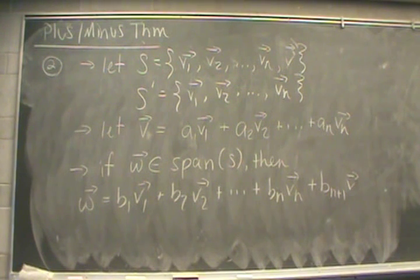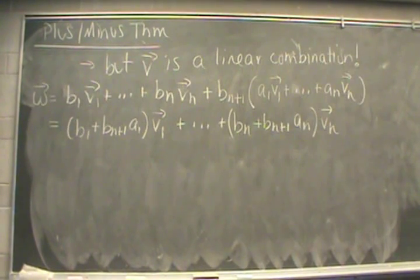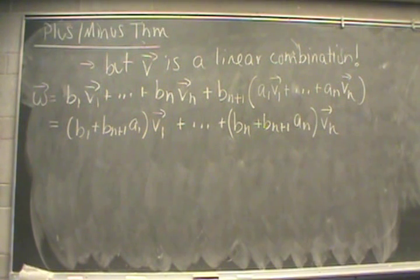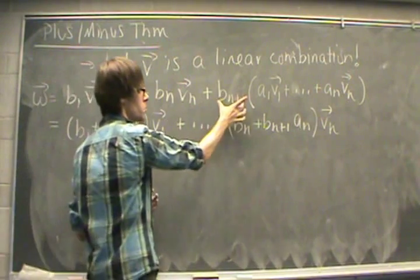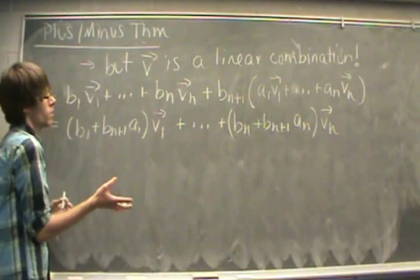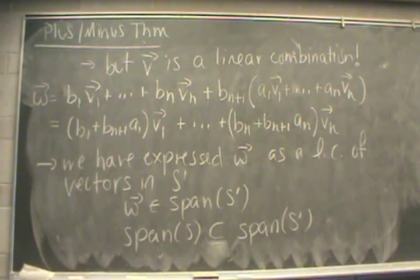We say that W is inside the span of S. If W is in the span of S, it can be expressed as a linear combination of vectors V1 through Vn plus V — giving us b1·V1, b2·V2, ..., bn·Vn, b(n+1)·V. Next we do a substitution: since V is a linear combination of V1 through Vn, we substitute that in on the right-hand side and recollect terms. The coefficient in front of V1 becomes b1 + b(n+1)·a1, and in front of Vn it becomes bn + b(n+1)·an. So we've expressed W as a linear combination of vectors in S'.